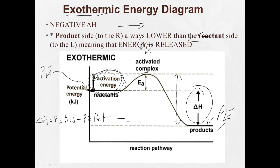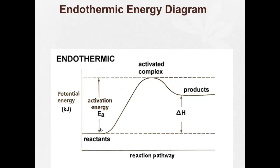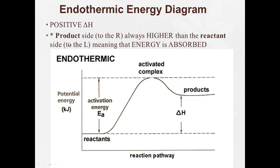An exothermic reaction always has a negative delta H. The product side is always lower than the reactants side, which is on the left — energy is released. In an endothermic diagram, those last couple of things are just the opposite: it's a positive delta H, and the product side to the right is always higher than the reactants side, which is on the left — meaning energy is absorbed.